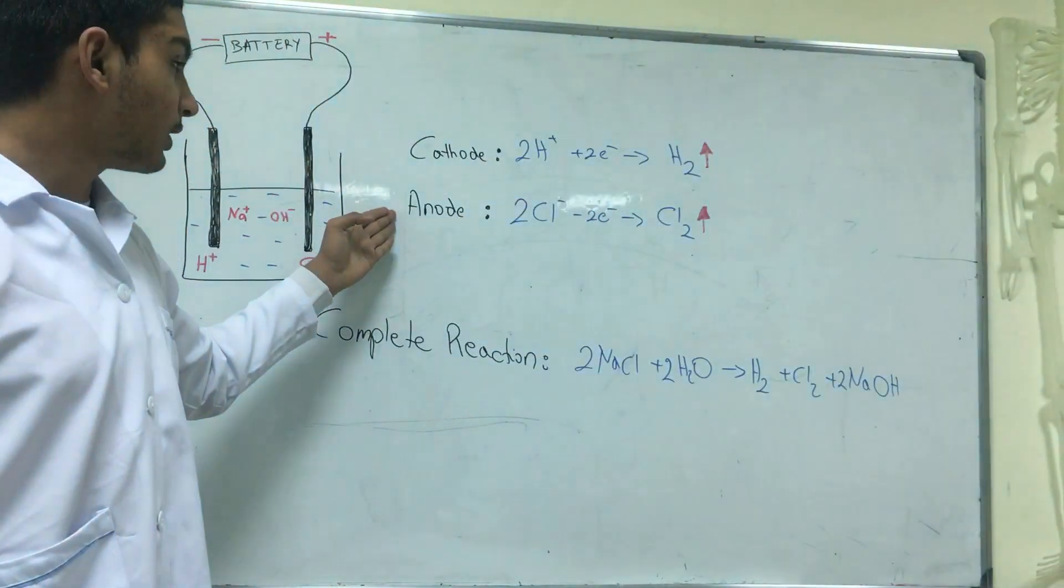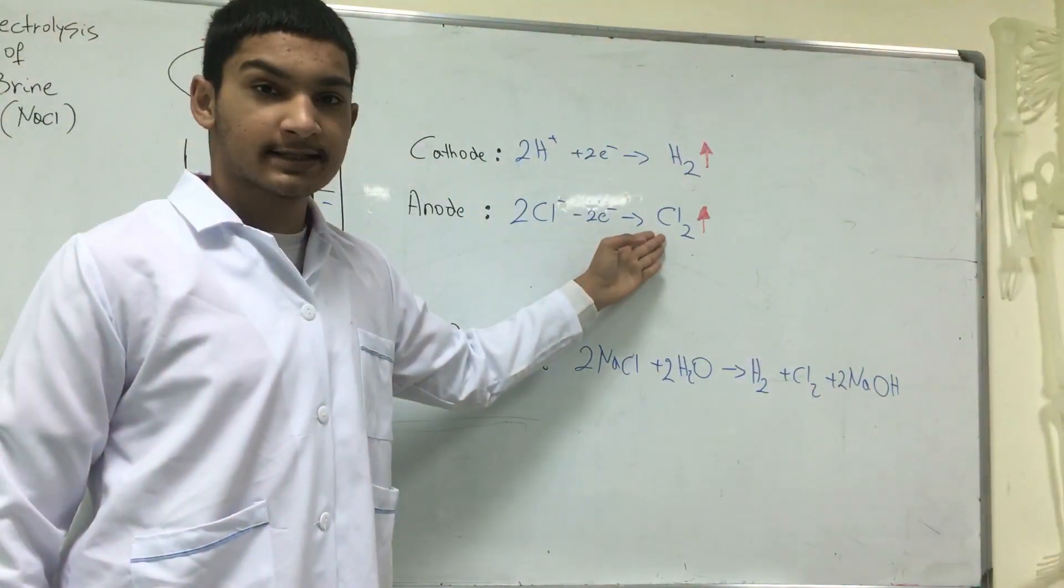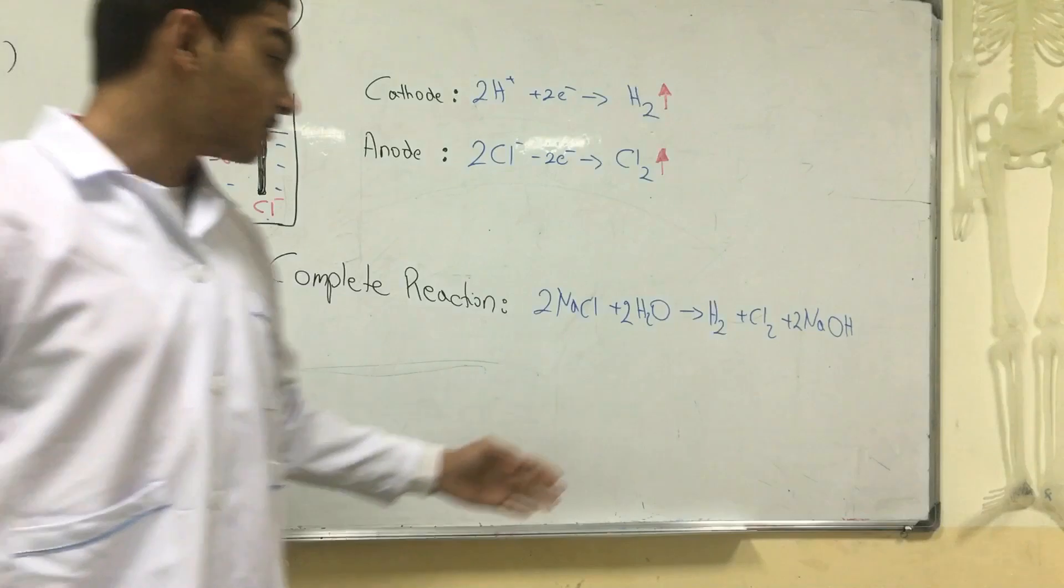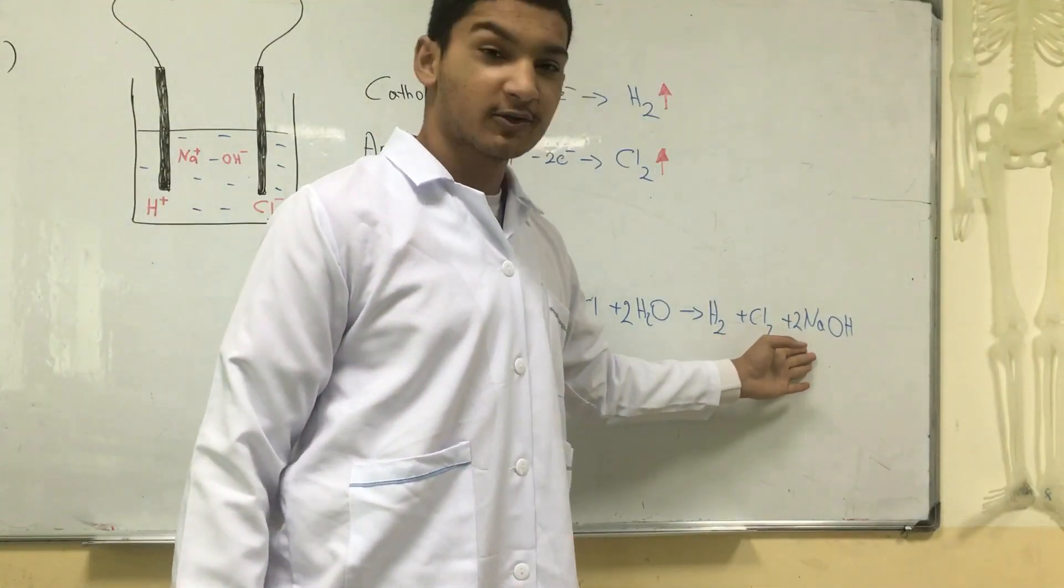At the anode we can see the production of chlorine as gases. Now we can see the complete reaction where the products are hydrogen, chlorine, and sodium hydroxide.